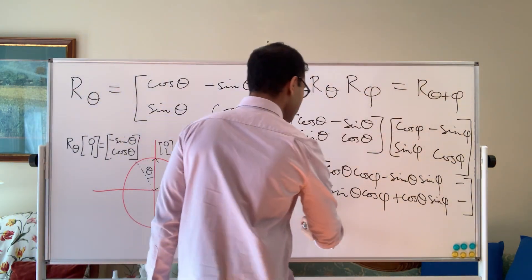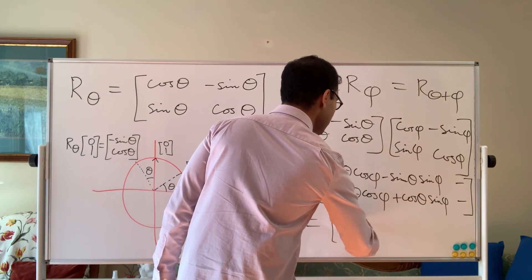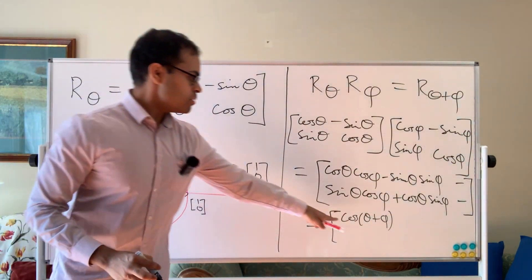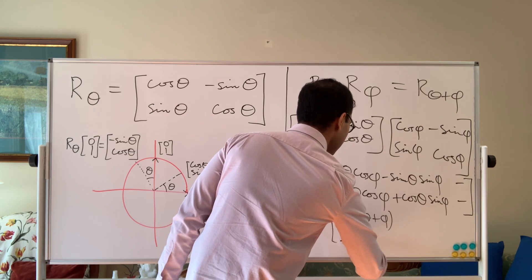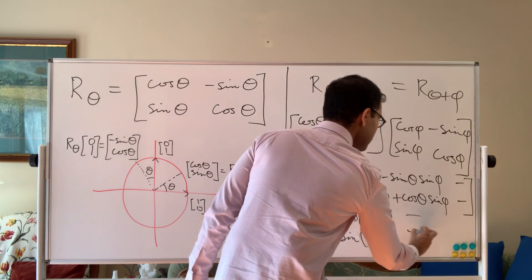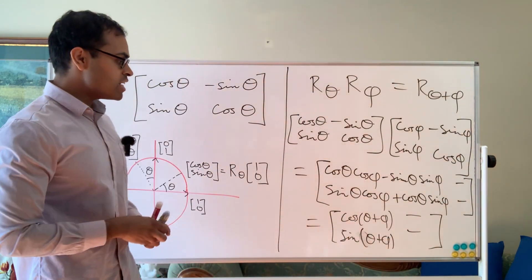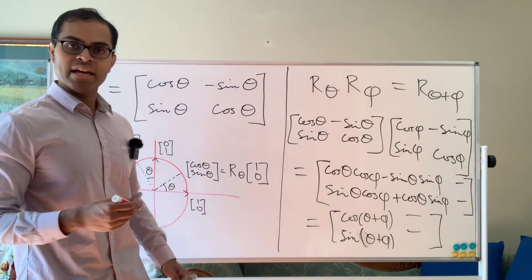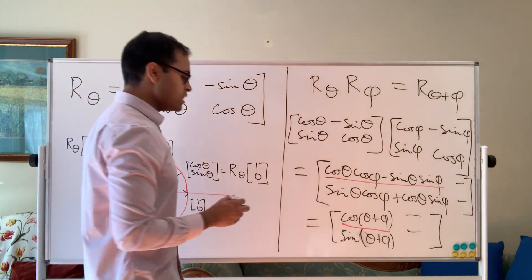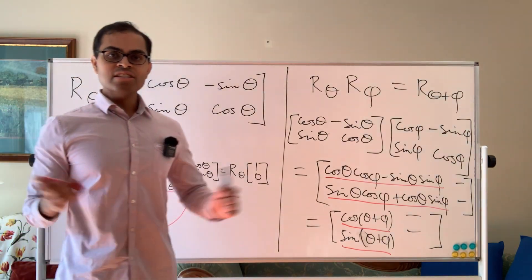It won't matter because we know that is R theta plus phi. All we want is the trig angle sum formulas. Here we're going to get cosine of theta plus phi. We know that R theta plus phi by this formula right here, it's going to be cosine theta plus phi comma sine theta plus phi in the first column. Therefore, if you just compare the two first columns, you get the trig angle sum formulas. You get that cosine theta plus phi is cosine theta cosine phi minus sine theta sine phi. That's just by comparing these two entries. And then you also get sine theta plus phi is sine theta cos phi plus cos theta sine phi by comparing those two entries. So that's all there is to it.